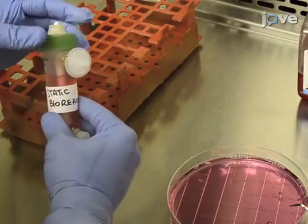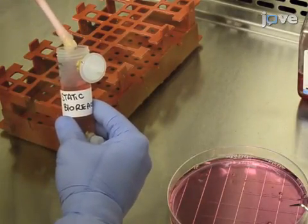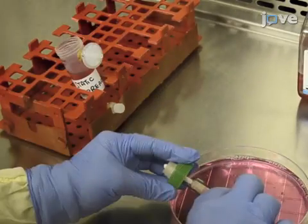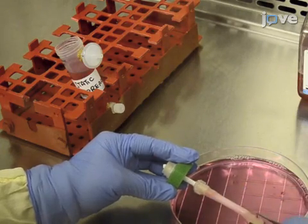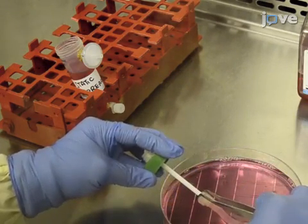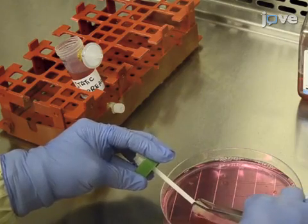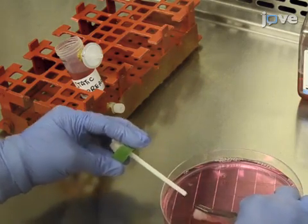Following one to two weeks of static maturation, transfer the bioreactor into a cell culture hood and gently remove the construct from its mandrel. Once free, place it into a 100 millimeter diameter petri dish containing 40 milliliters of fresh culture medium.